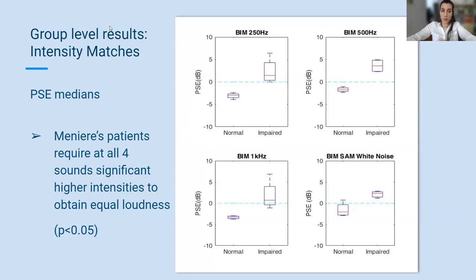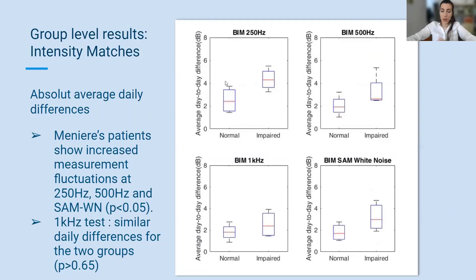The intensity matching group results are illustrated as box plots. You can see the medians and the interquartile ranges. Meniere's patients require, at all four tests, significantly higher intensities to obtain equal loudness than the normal hearing group. To capture the hearing loss fluctuation, which is a diagnostic feature, we calculated the absolute average daily differences of our measurements. Meniere's patients show increased fluctuation at all tests except the 1 kHz test. This finding is encouraging for the validity of our measurements, as 1 kHz is a frequency known to fluctuate less. This result can also be associated with the presence of a peak audiogram, which I described earlier, and which constitutes a significant diagnostic element.